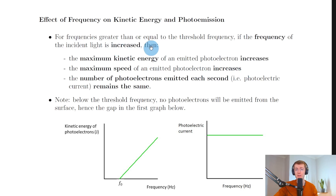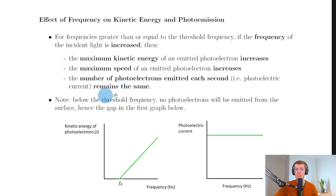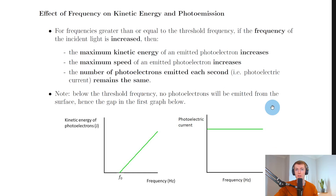Lastly, if the frequency of the incident light is increased, the number of photoelectrons emitted each second — which we call the photoelectric current — remains the same. Remember, a flow of electrons can be called a current, so that's why we call it the photoelectric current here. So increasing the frequency causes maximum kinetic energy and maximum speed to increase, but it has no effect on the number of photoelectrons emitted each second from the metal surface.